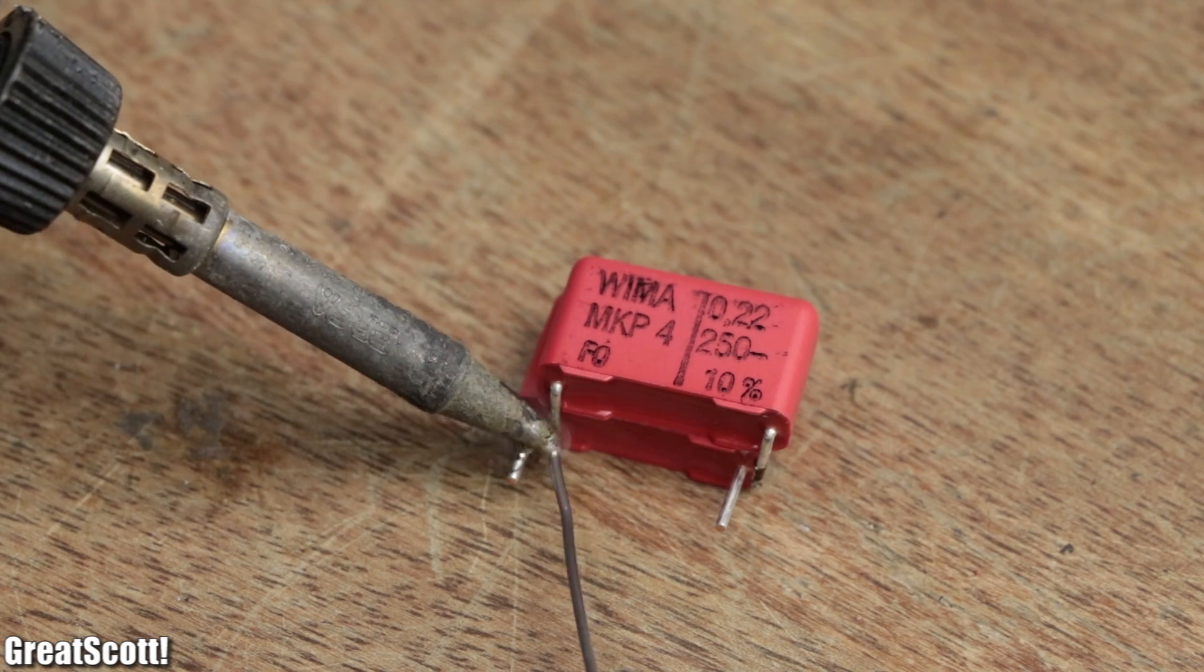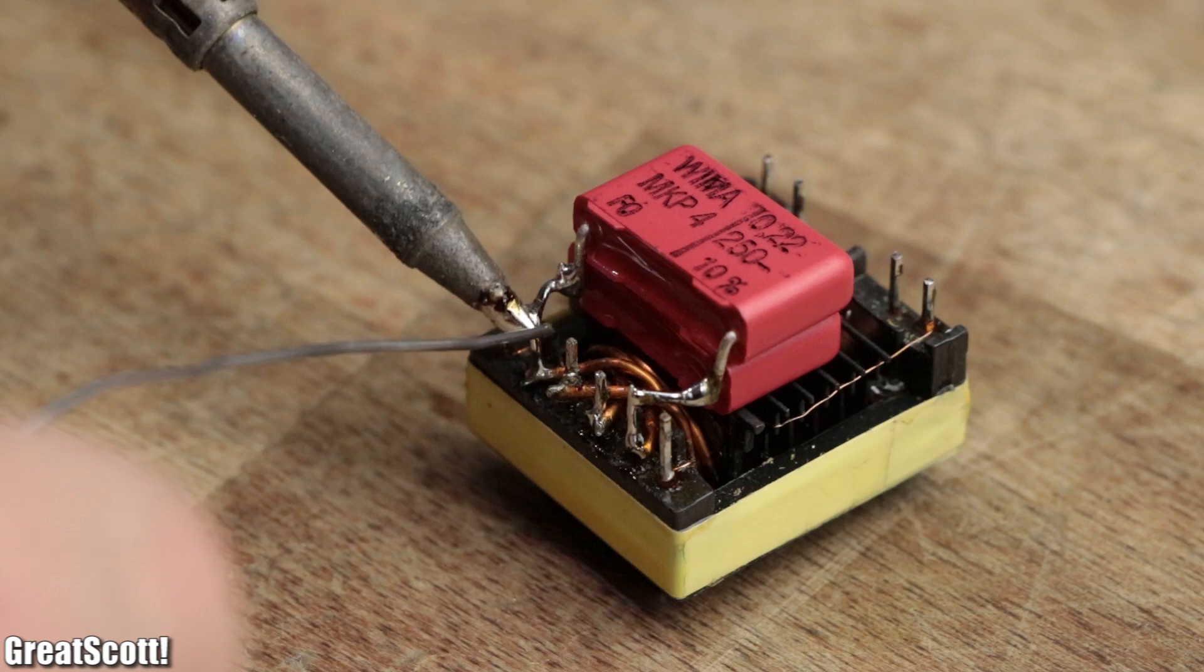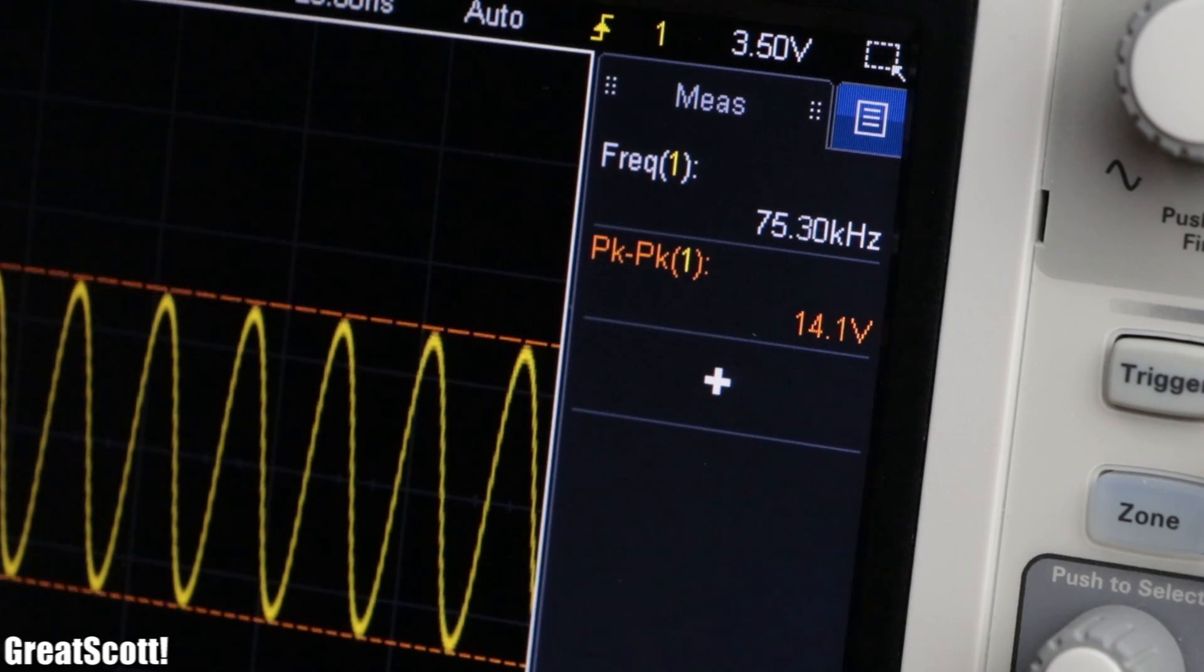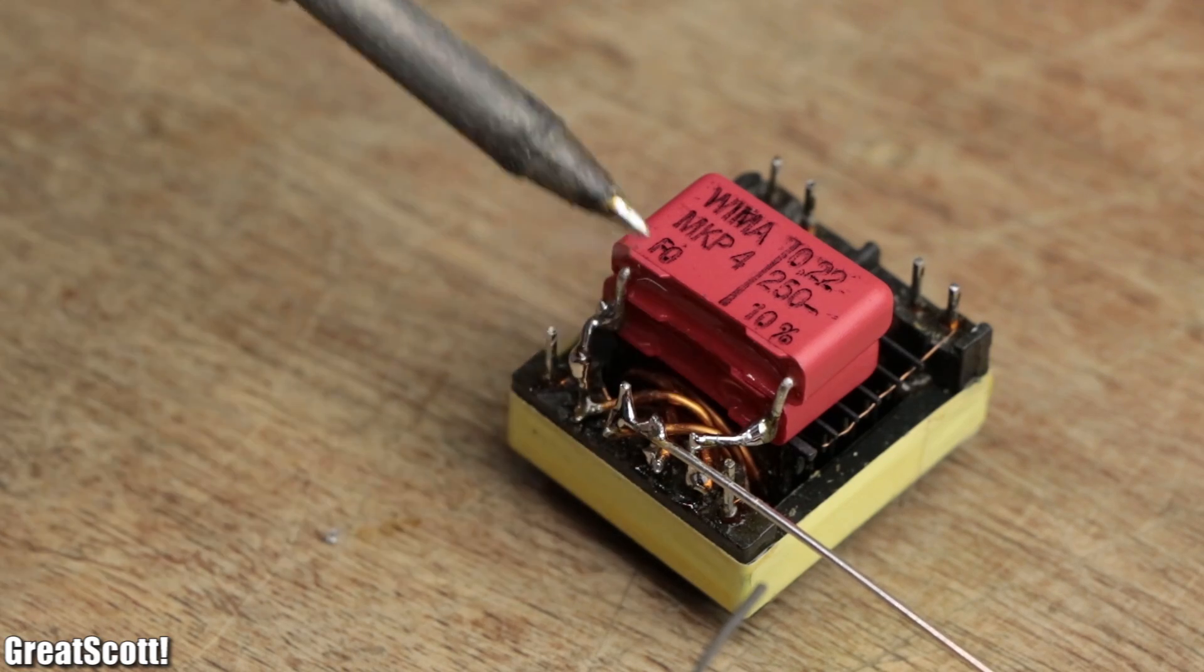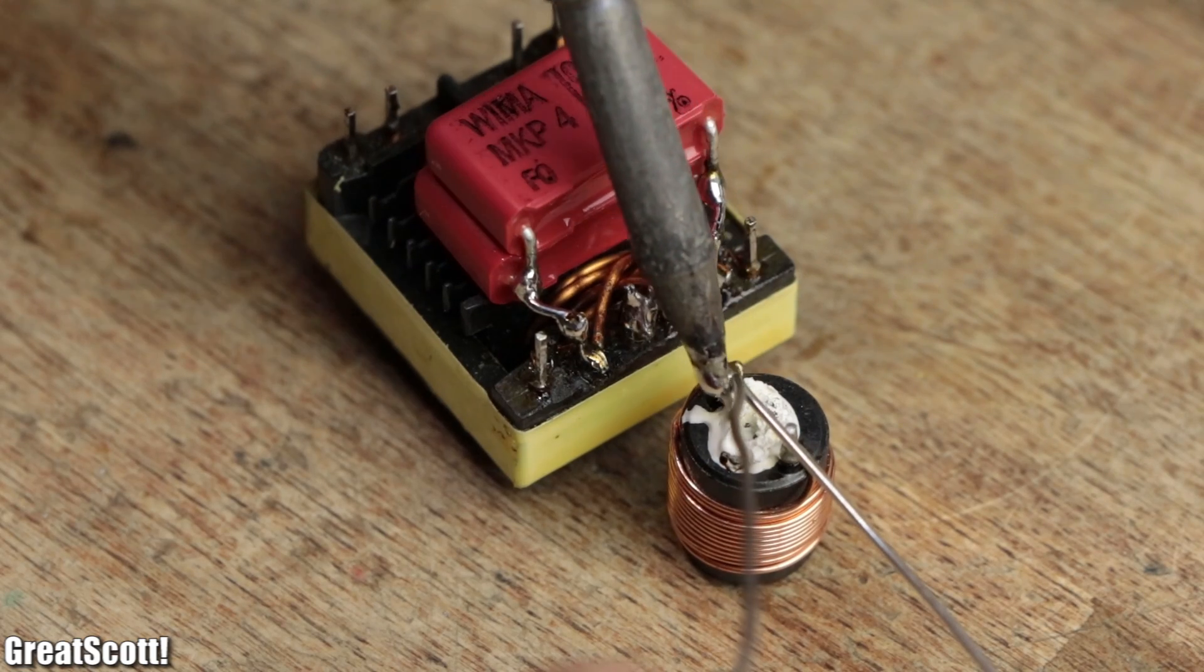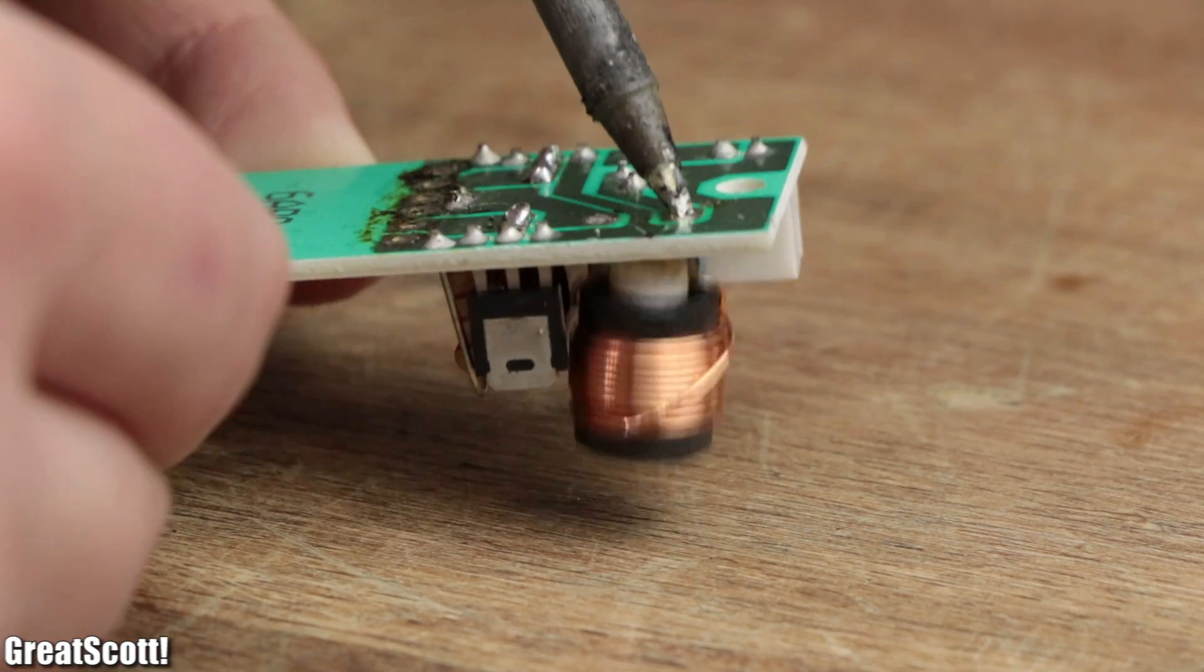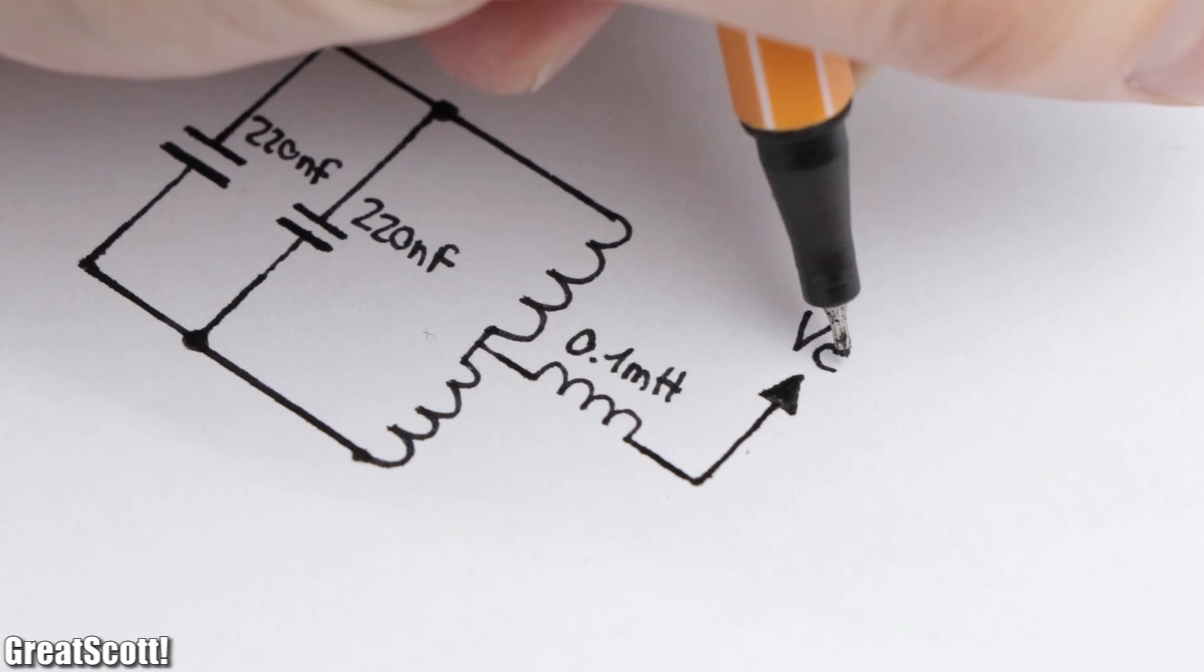To form a resonant circuit, I firstly soldered two 220 nanofarad capacitors in parallel to the primary coil, which will later create a sine wave with a frequency of 75 kilohertz. The center of the primary coil gets connected to a 0.1 millihenry inductor, which I salvaged from the previously hacked CCFL circuit to act as a constant current source when connected to the supply voltage.